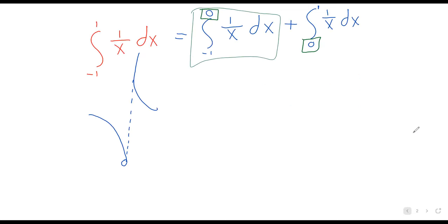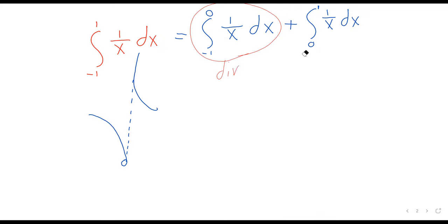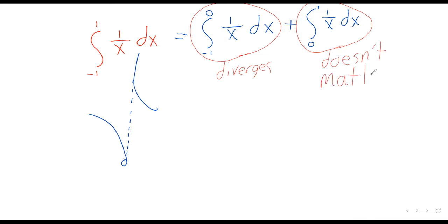This integral diverges, and since this integral diverges, we are done. Whether the other piece converges or diverges doesn't matter. For the original integral to exist, both component integrals must exist. The second we see that one of these doesn't exist, we're done. Problem's done. That's improper integrals—that's the first of two largely unrelated topics covered under the umbrella term of improper integrals.